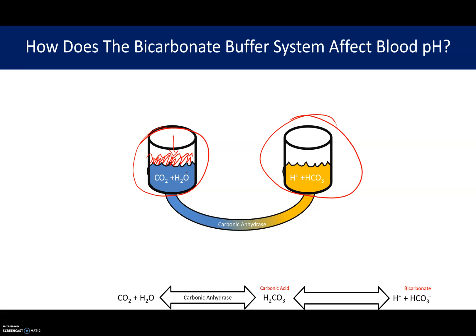What's going to happen if I fill up the cup with CO2 and water? Because they're connected through a tube — which represents carbonic anhydrase — the other side will also fill up slightly. So if I add 100 units over here, 50 of those units will remain on the CO2 side and 50 will be added in the form of hydrogen and HCO3. It's a balance.